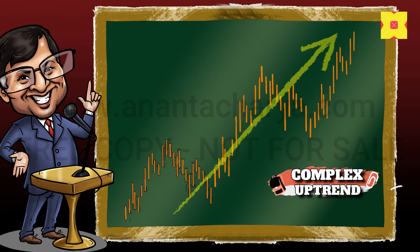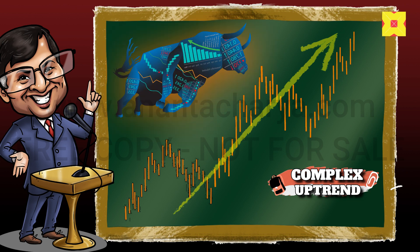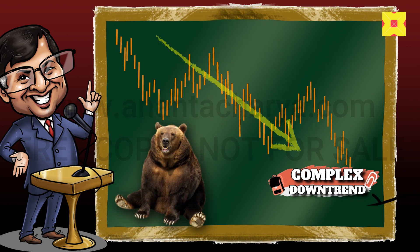A complex trend defines the larger trend and mood of the markets. We can say a bull market is a complex uptrend and a bear market is a complex downtrend.